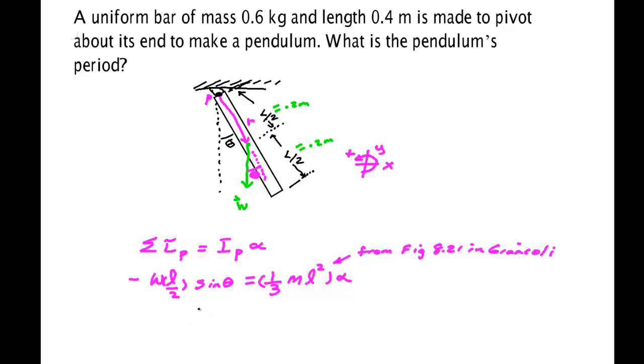Now looking at this we can do some things. We immediately see that we can cancel the M's because this is just MG. We can cancel one of the L's and so we get minus G over 2 sine theta is equal to 1/3 L times alpha.